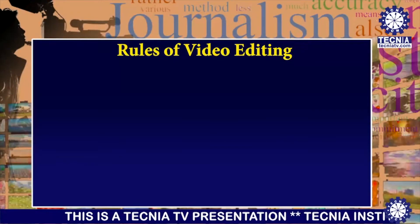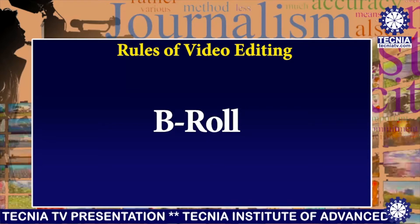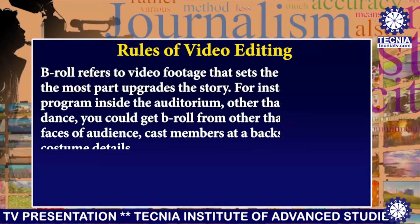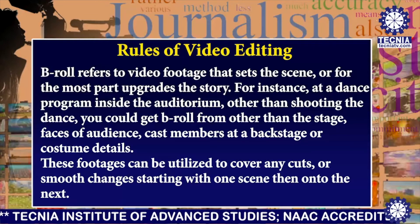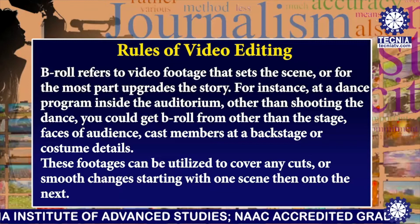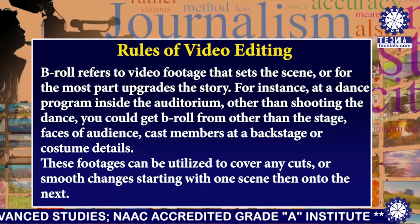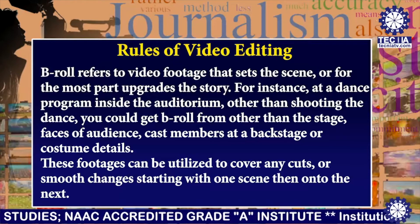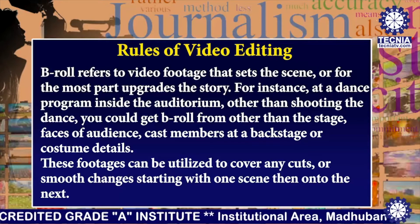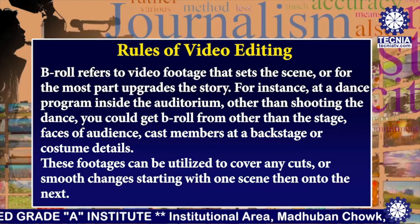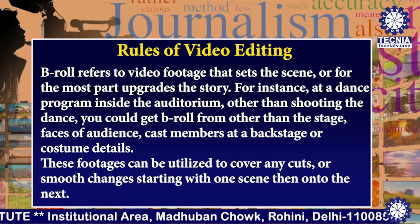So what are the rules of video editing? Let's get started with rule number one: b-roll footage. B-roll refers to video footage that sets the scene or upgrades the story. For instance, at a dance program inside an auditorium, other than shooting the dance, you could get b-roll from other than the stage — faces of the audience, cast members backstage, or costume details. These footages can be utilized to cover any cuts or smooth transitions from one scene to the next.